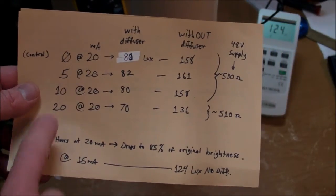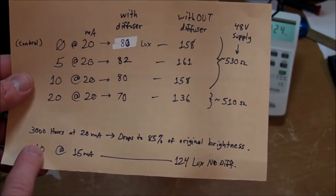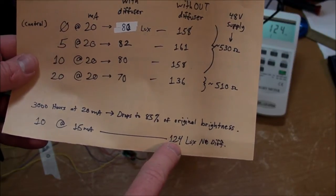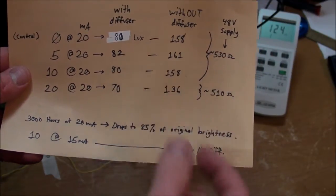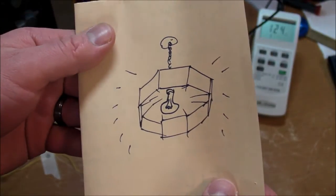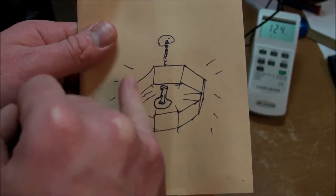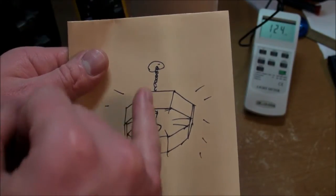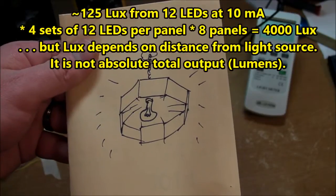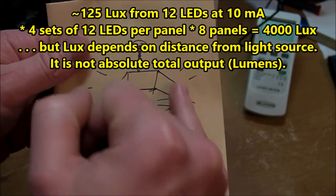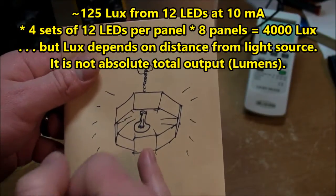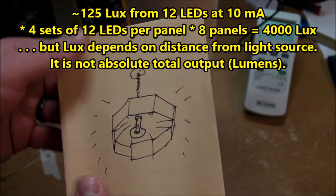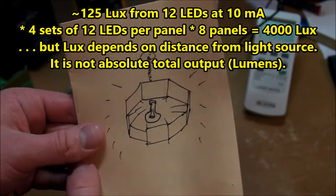I was thinking that maybe I would run it at 15 milliamps. I tested the 10 milliamp string, the set that I was running at 10 milliamps, and I tested it at 15 milliamps and I got 124 lux without the diffuser. So you put eight of those together, there's the eight individual panels that I planned to mount in a chandelier type arrangement hanging from the ceiling like that. Lux is a relative measurement depending on distance. I have yet to do any lumen calculations or measurements.